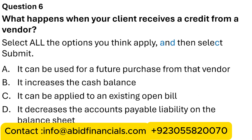Question 6. What happens when your client receives a credit from a vendor? The correct answers are: Option A — it can be used for a future purchase from the vendor; Option C — it can be applied to an existing open bill; and Option D — it decreases the accounts payable liability on the balance sheet.